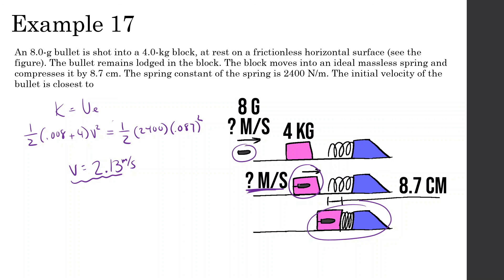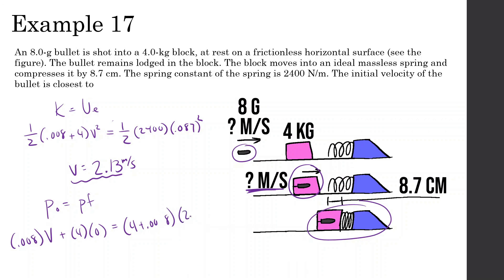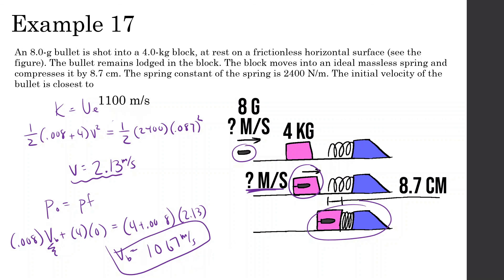Now that we know the combined system moved at 2.13 m/s after the collision, let's find the bullet's initial velocity using conservation of momentum. Before: 0.008 kg bullet at unknown velocity, 4 kg block at rest. After: combined mass 4.008 kg at 2.13 m/s. So 0.008 × V_bullet = 4.008 × 2.13. Solving: V_bullet = (2.13 × 4.008) / 0.008 = 1067 meters per second. That was a bit complex because it combined both energy and momentum — watch again if it didn't make sense. Next time we'll be doing 2D inelastic collision problems.